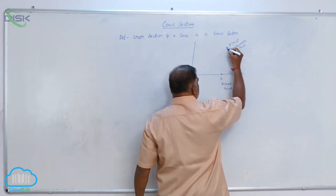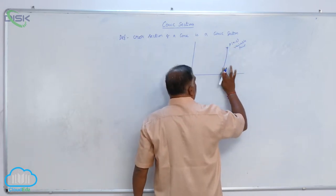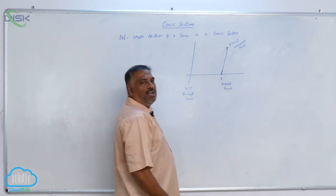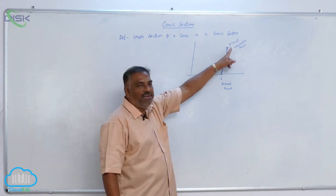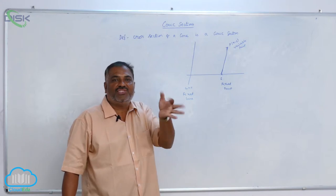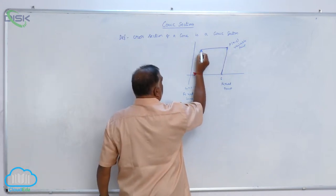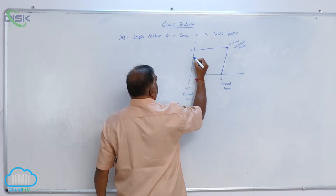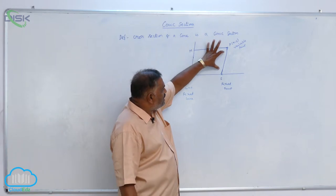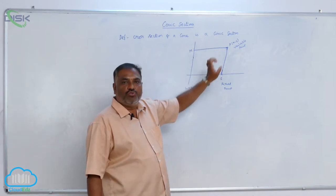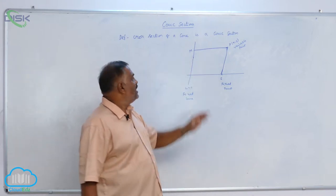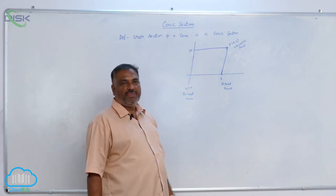Now, join SP. SP is nothing but the distance between the two points. Now, from P, draw perpendicular. When you draw perpendicular, it is the perpendicular distance. So, this is perpendicular distance. Let us say this is M. Now, you are able to see two distances. One is SP, distance between the two points. Another one is PM, perpendicular distance from point P to the given line L.